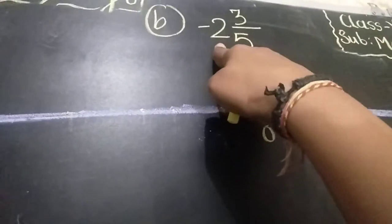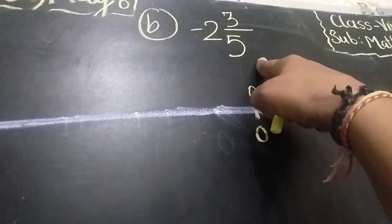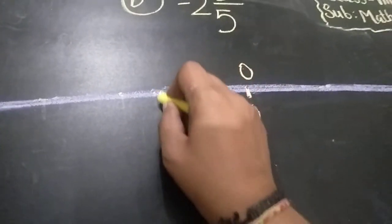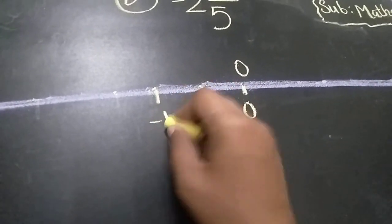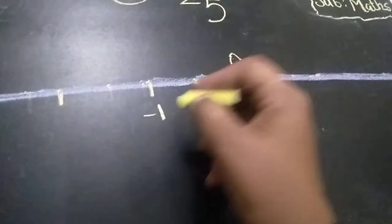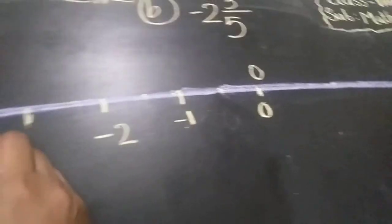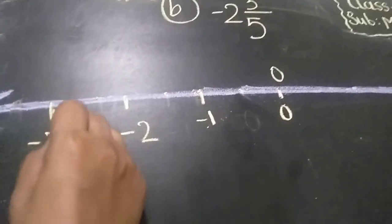Now you have to take here minus 2, 3 by 5 rational number. That means first you have to take a negative integer. Here is, this shows minus 1, here is equal length, it should be minus 2 and here is minus 3.